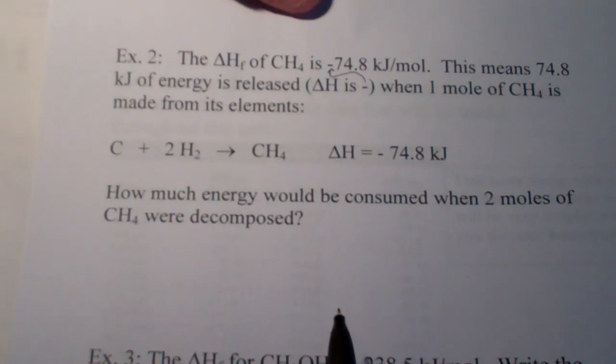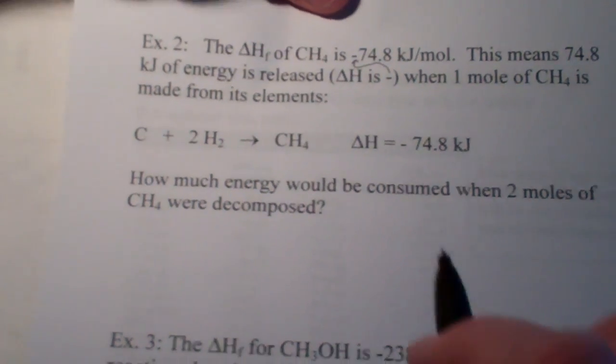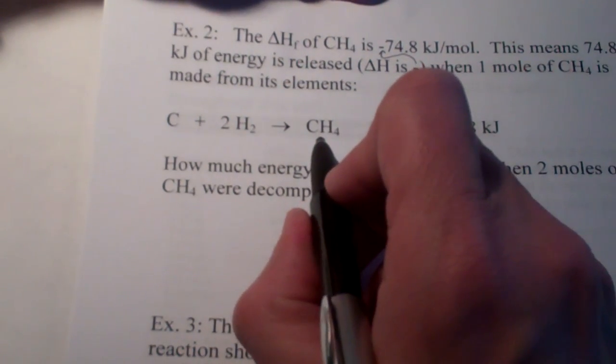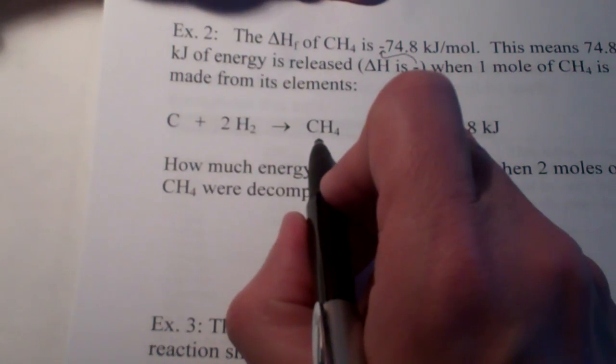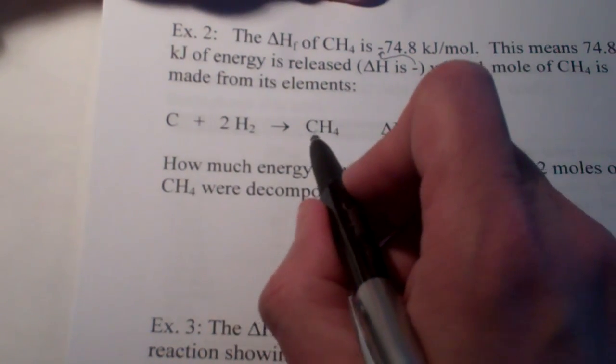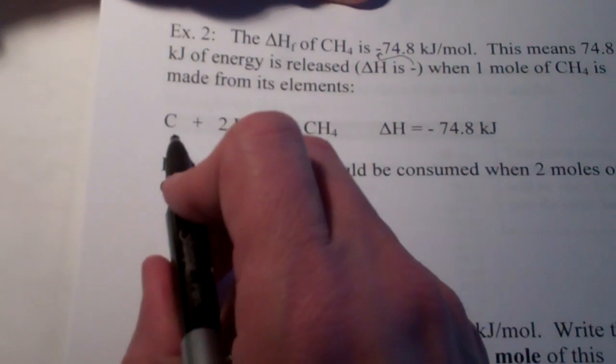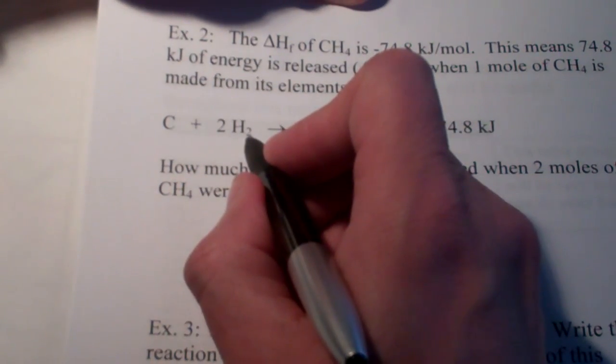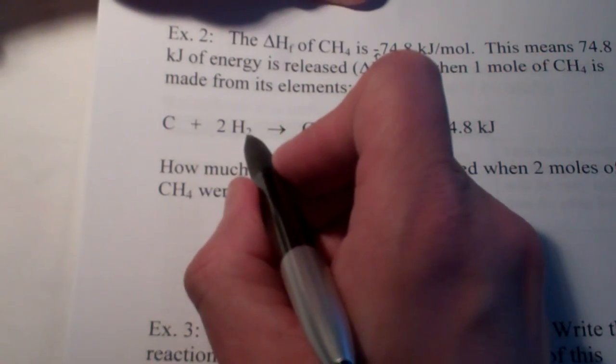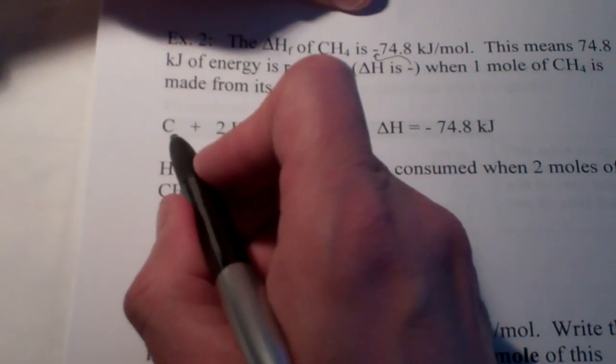So, let's write an equation representing the formation of one mole of methane. So, I'll put the compound CH4 on the right-hand side. And, of course, it's being formed from its elements. The elements that make up CH4 are obviously carbon and hydrogen. Once again, why did I call that H2 instead of just H? You're right. It's a diatomic element.